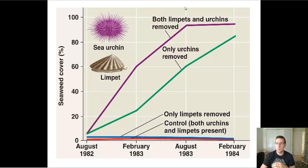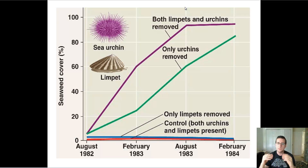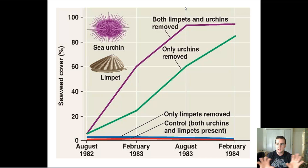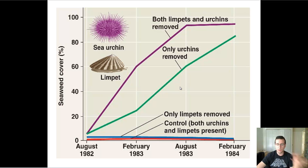We'll learn more about carrying capacity when we do population ecology. But notice how this shows that the urchin makes much more of an impact than any other species that eats kelp — which is why the otters also matter. Together, they're a keystone species. This is an example of experimental biology done to actually prove their role as keystone species.